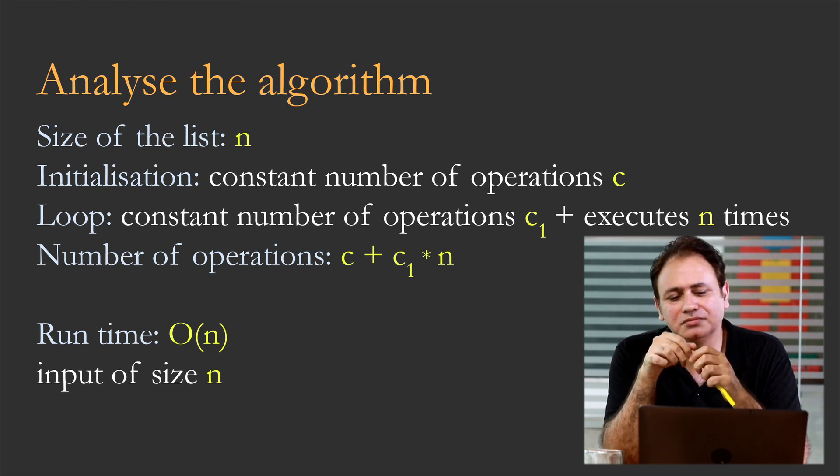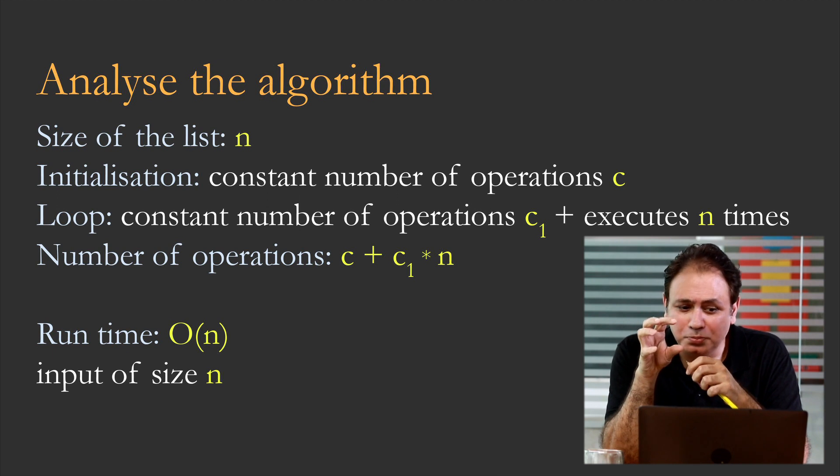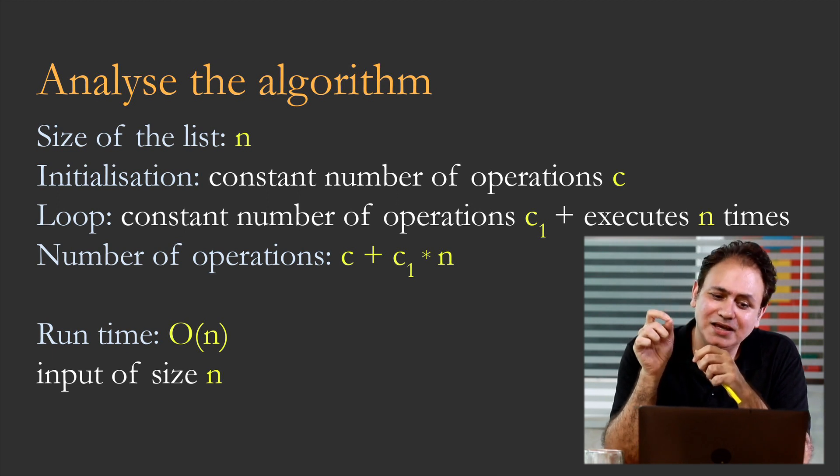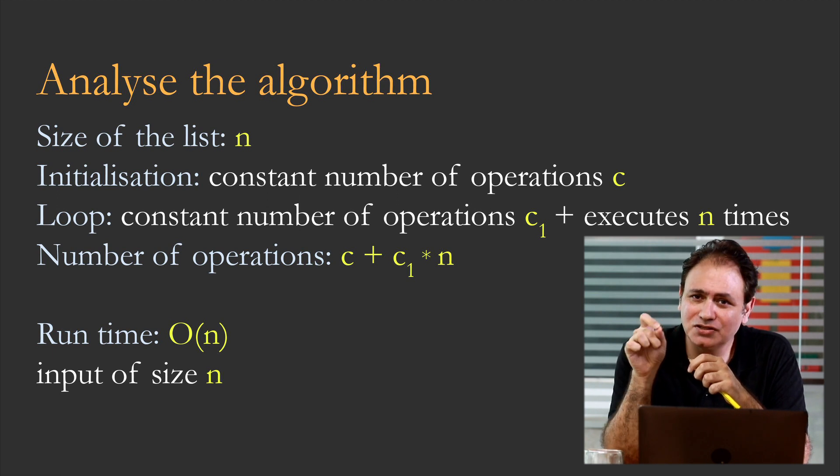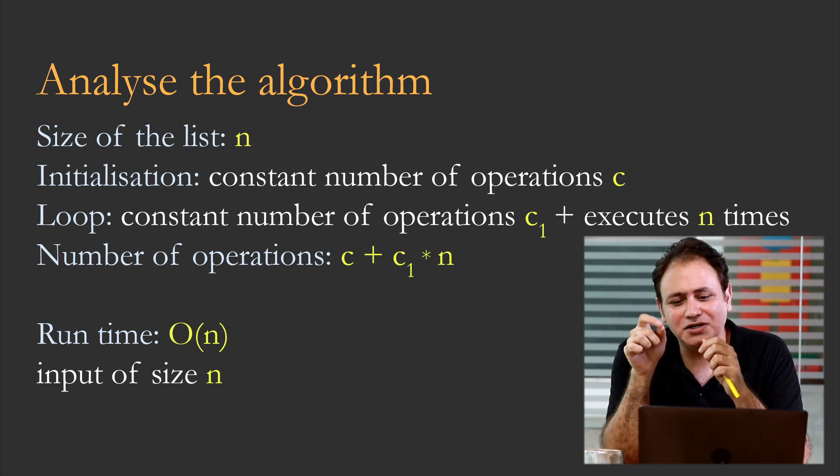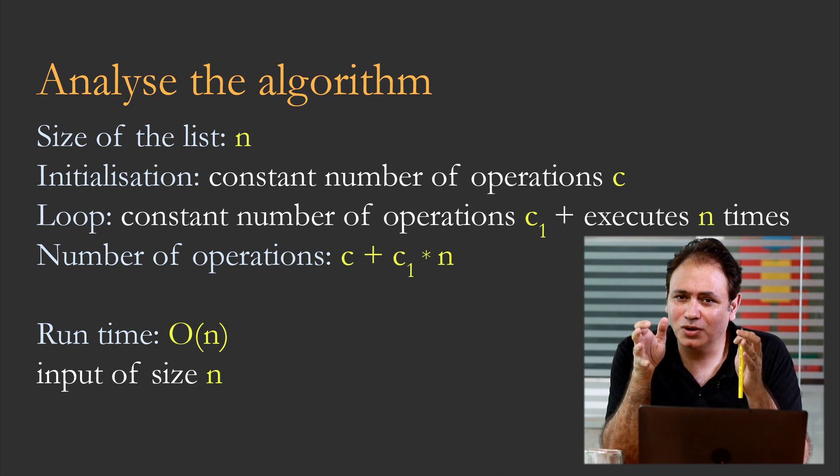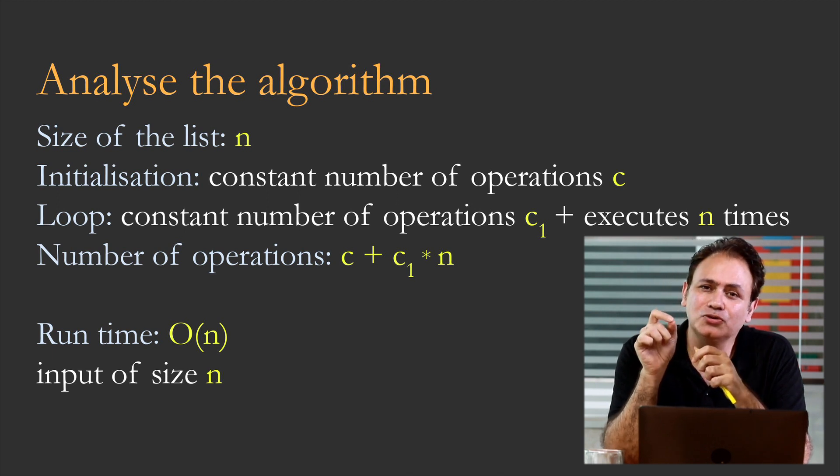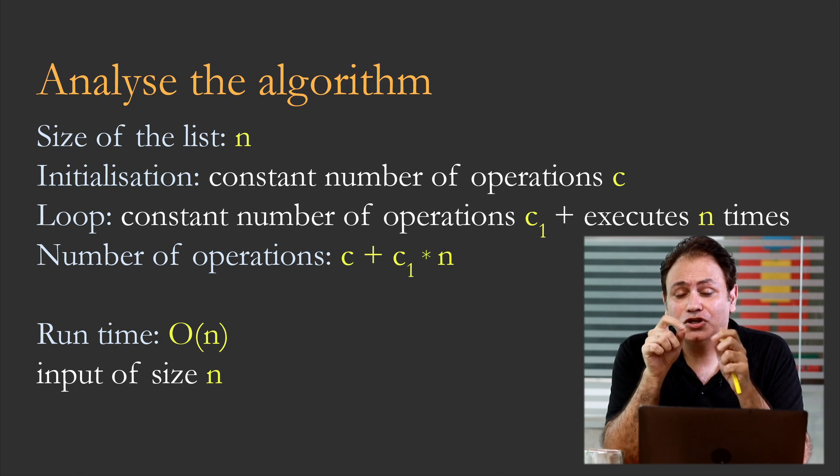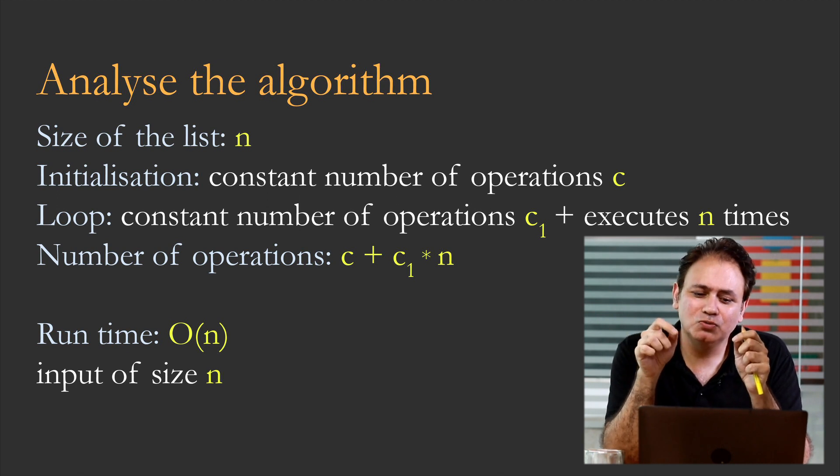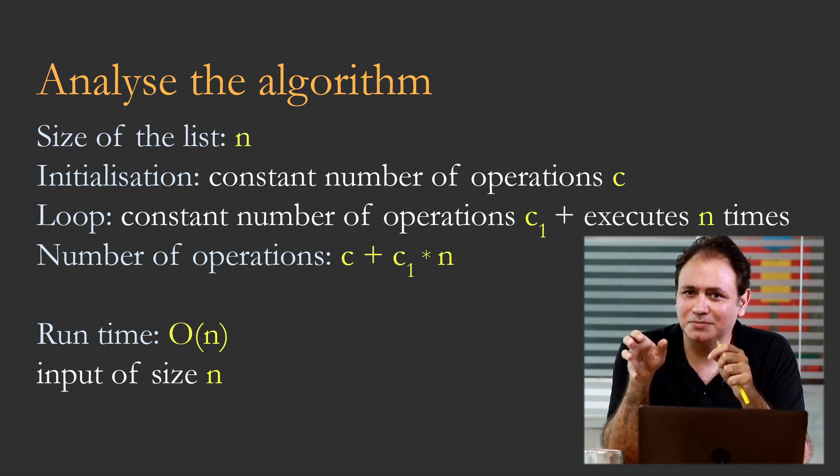Let c be that constant. Now when you get into the loop, then the loop has a constant number of operations plus it executes n times. Constant number of operations, call it c1, but then it also executes n times. So the total number of operations would be c plus c1 times n.